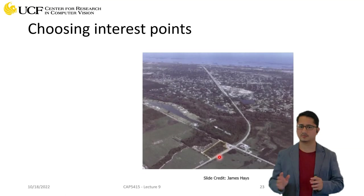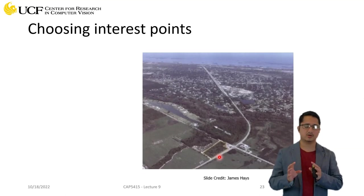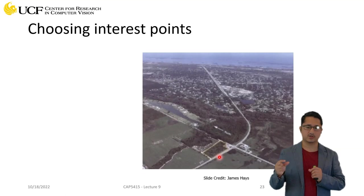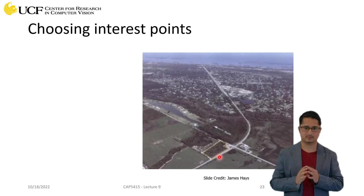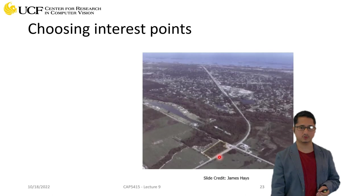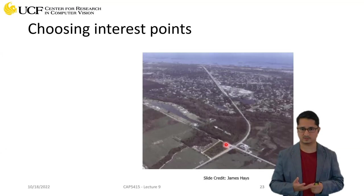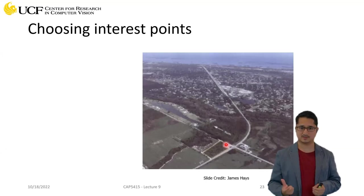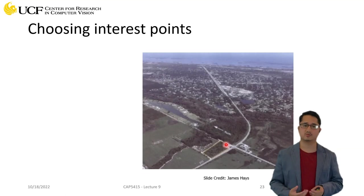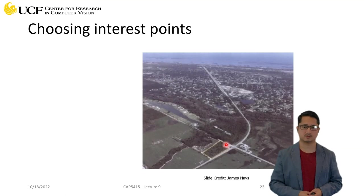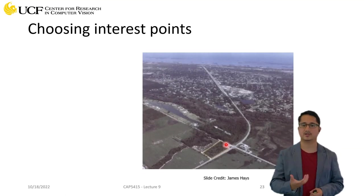That location should be distinctive — there should be no confusion. For example, if there are two bridges on this road, you'd never say 'let's meet on the bridge' because your friend won't know which one. It should be distinct, and that's the whole idea about key points and interesting points. That's how we want our algorithms to operate: to identify those key locations and use them for downstream tasks.